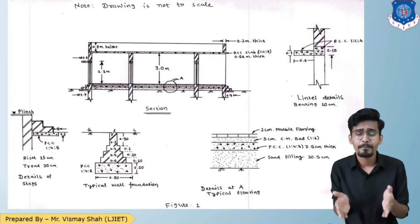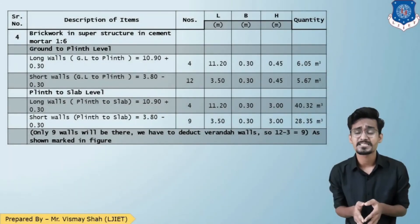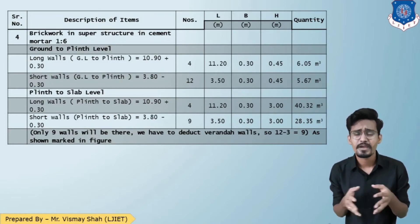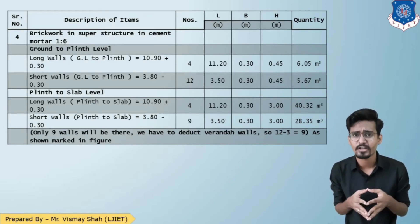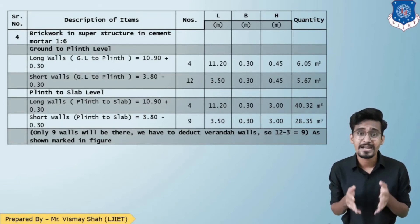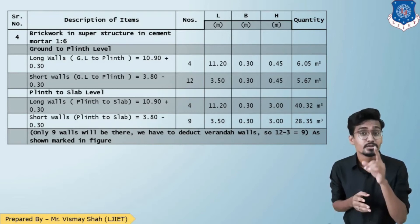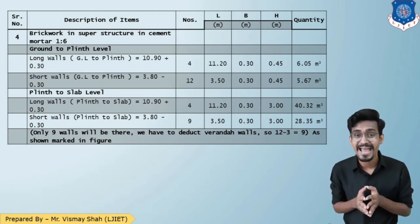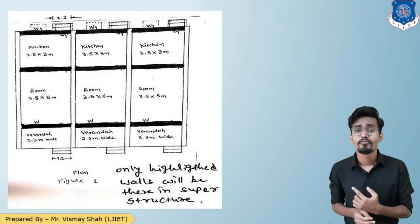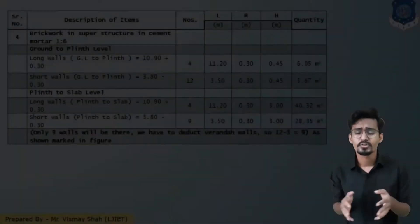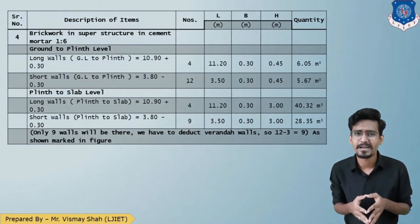The fourth quantity is brickwork in superstructure. From the section, the height from plinth to slab level is 3 meters. The calculation is divided into: ground to plinth, plinth to slab, and slab to parapet. The plinth height is 0.45 m and wall thickness is 0.30 m. For the short walls at superstructure level, the number is 9 instead of 12, because the front veranda wall is absent — 12 minus 3 equals 9 walls.